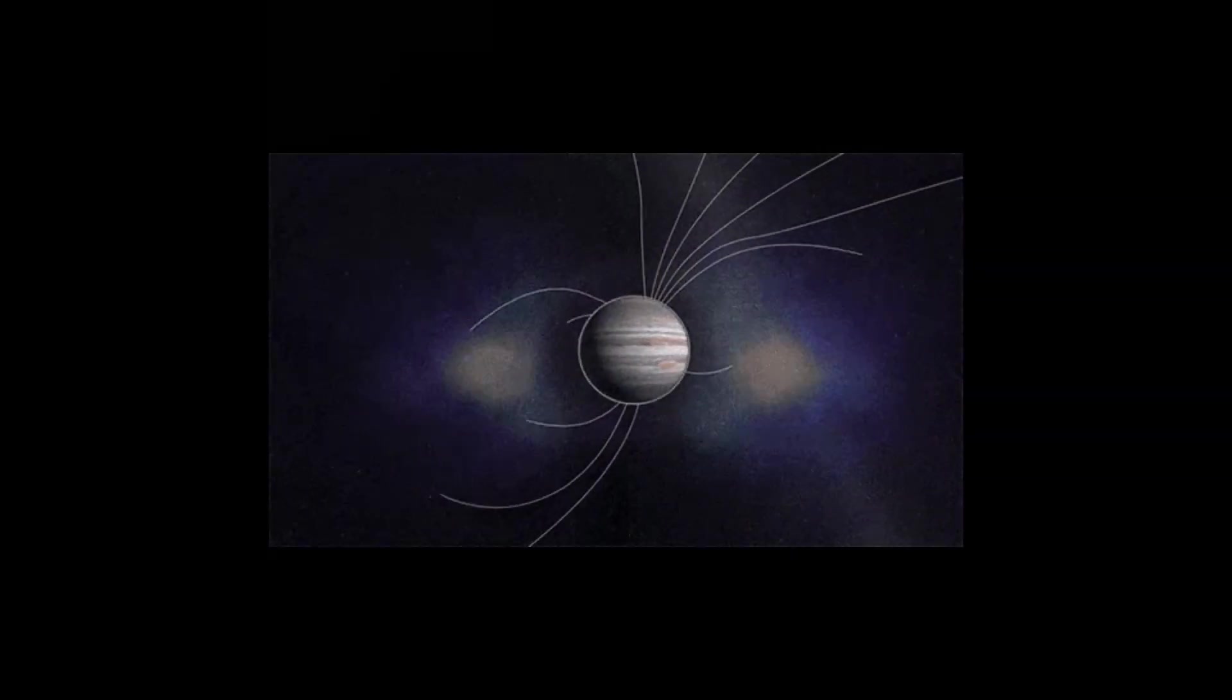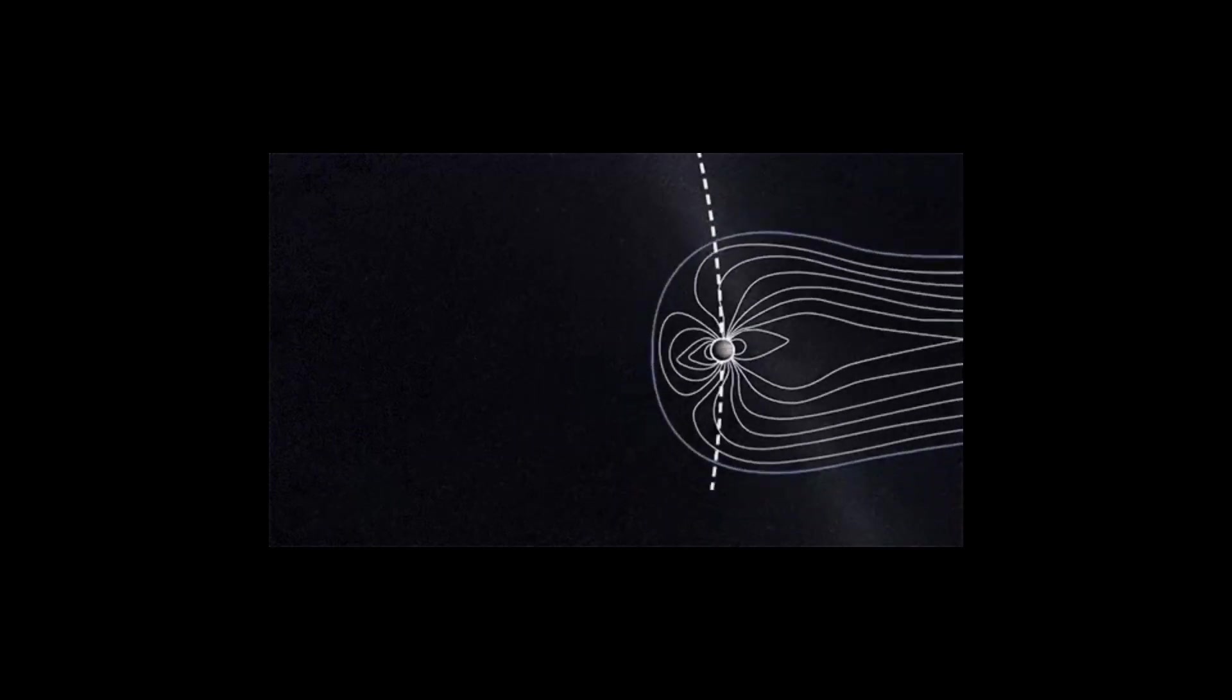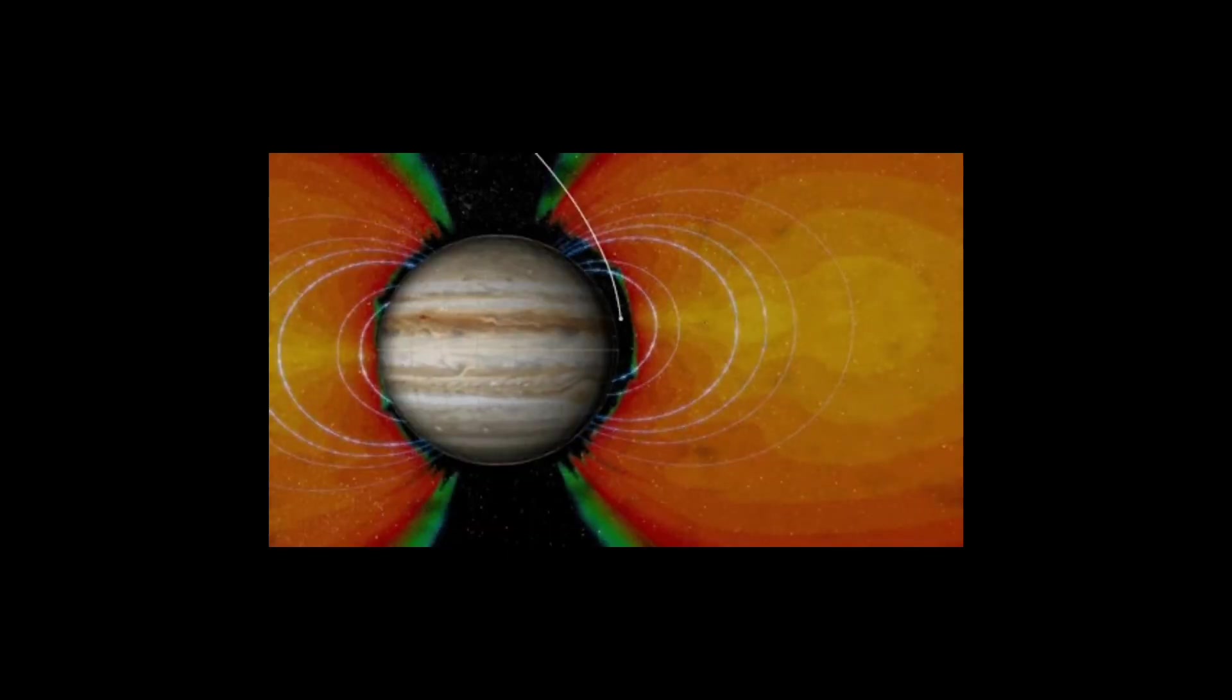Jupiter's magnetosphere is one of, if not the largest thing in our solar system. If we could see its wavelengths, they would appear two to three times the size of the sun or moon from Earth.